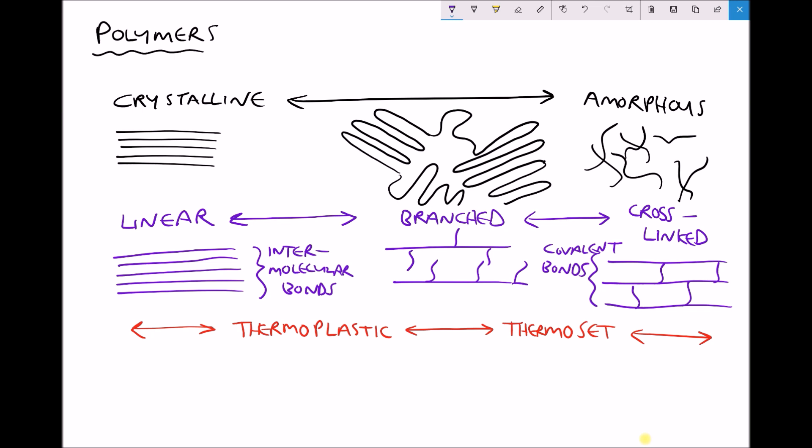Thermoplastics can be molded to form a shape, but then when heat is supplied they will remelt. So typically our thermoplastics can be recycled because even though they've been formed into a shape, they can be heated and melted and then formed into a new shape.